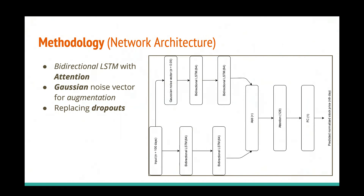This is my proposed model architecture. I took 100 days of data as input, followed by a bidirectional LSTM with 64 units, then another bidirectional LSTM with another 64 units. The noise version of the input is augmented through a Gaussian noise vector layer with sigma of 0.05, and then passed through another similar two-layer bidirectional LSTM with 64 units. Finally, I performed addition and then applied the attention layer discussed previously, followed by a fully connected neural network to predict the normalized stock price. It is a small network focused on minimizing parameters, but it achieves very good accuracy.